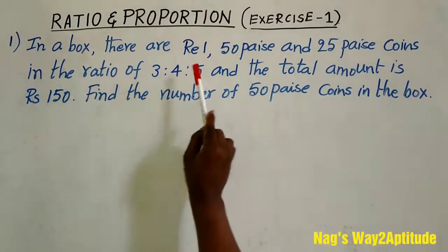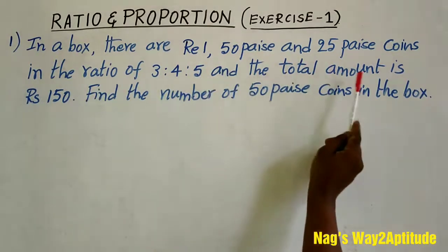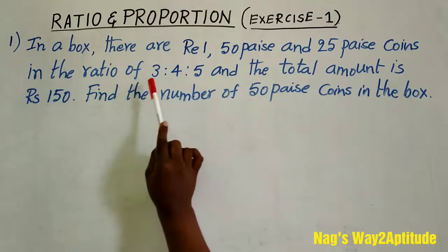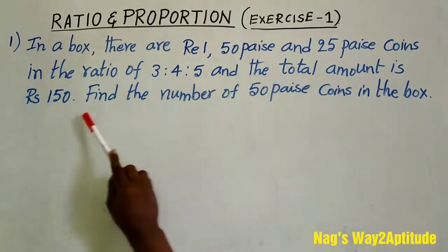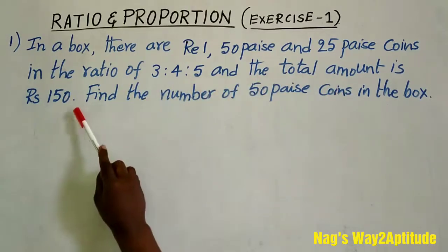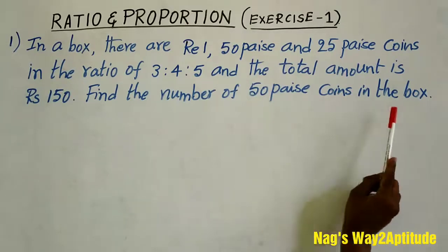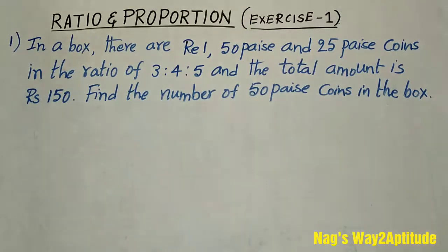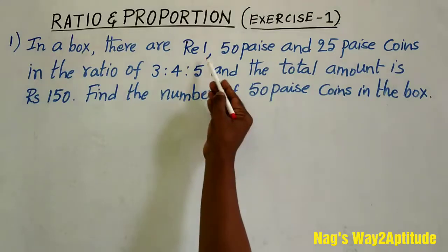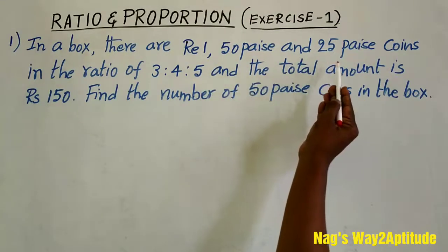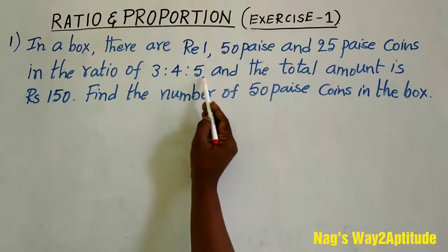In your box, there are 1 rupee, 50 paisa and 25 paisa coins in the ratio of 3 is to 4 is to 5 and the total amount is 150 rupees. Find the number of 50 paisa coins in the box. Here friends, the denominations are given as 1 rupee, 50 paisa and 25 paisa coins and they are in the ratio of 3 is to 4 is to 5.